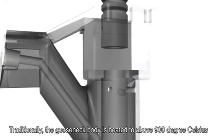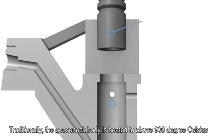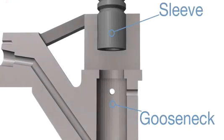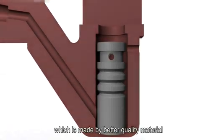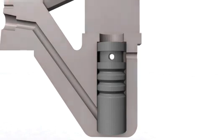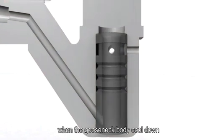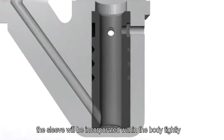Traditionally, the gooseneck body is heated to above 900 degrees Celsius to become ready to receive the sleeve, which is made by better quality material. When the gooseneck body cools down, the sleeve will be incorporated within the body tightly.